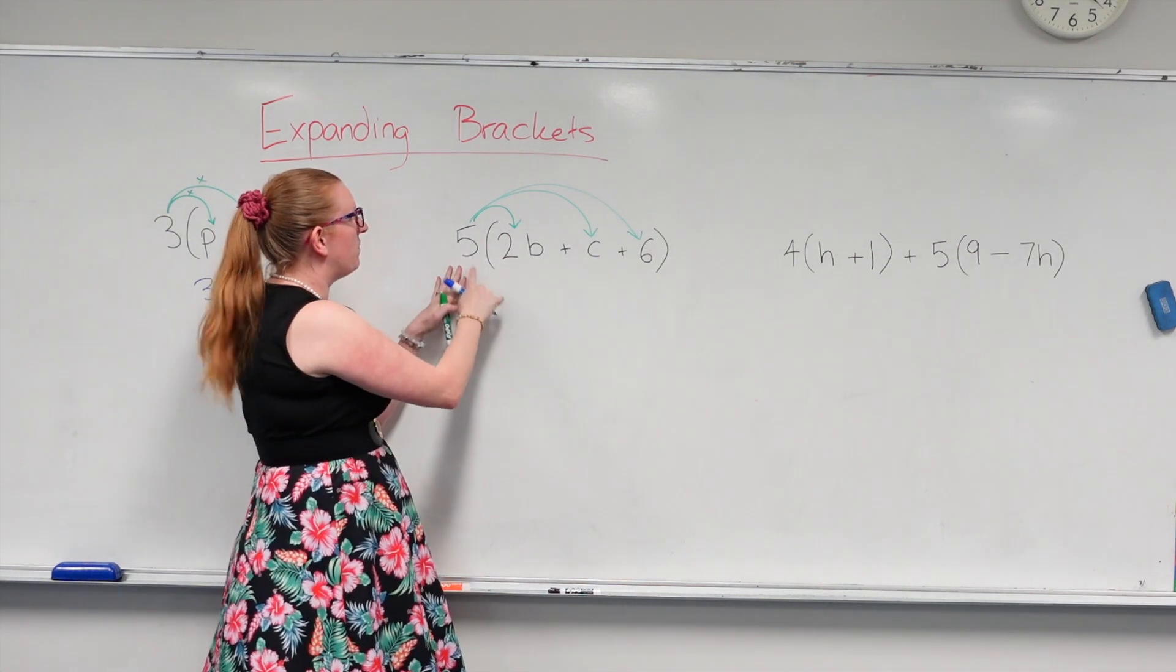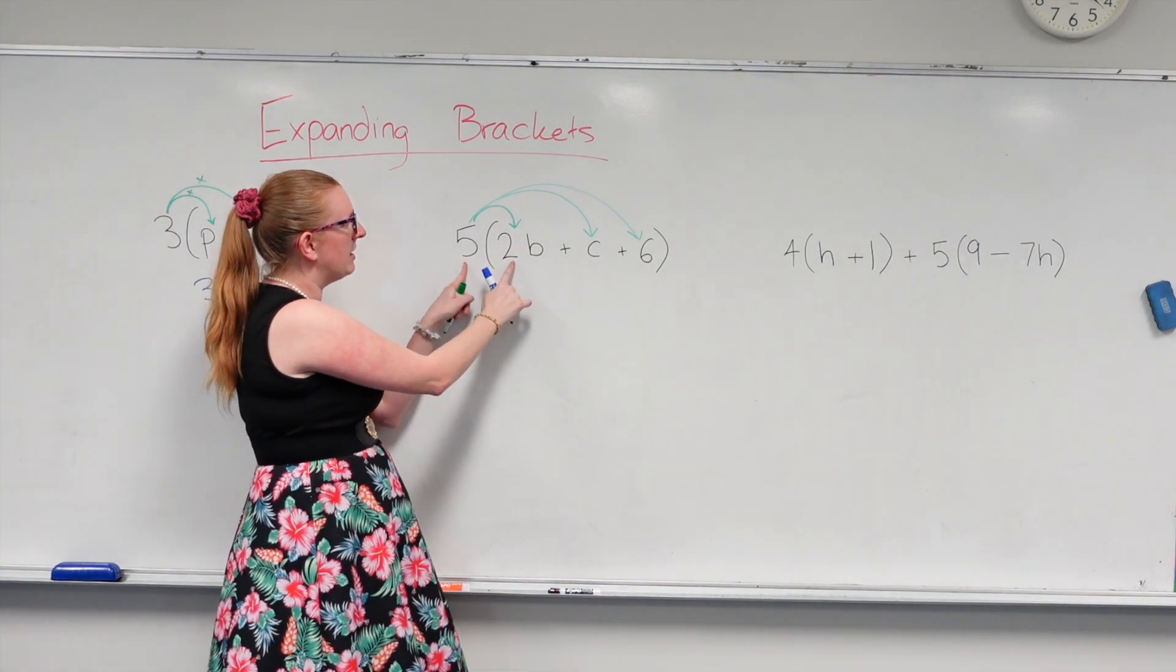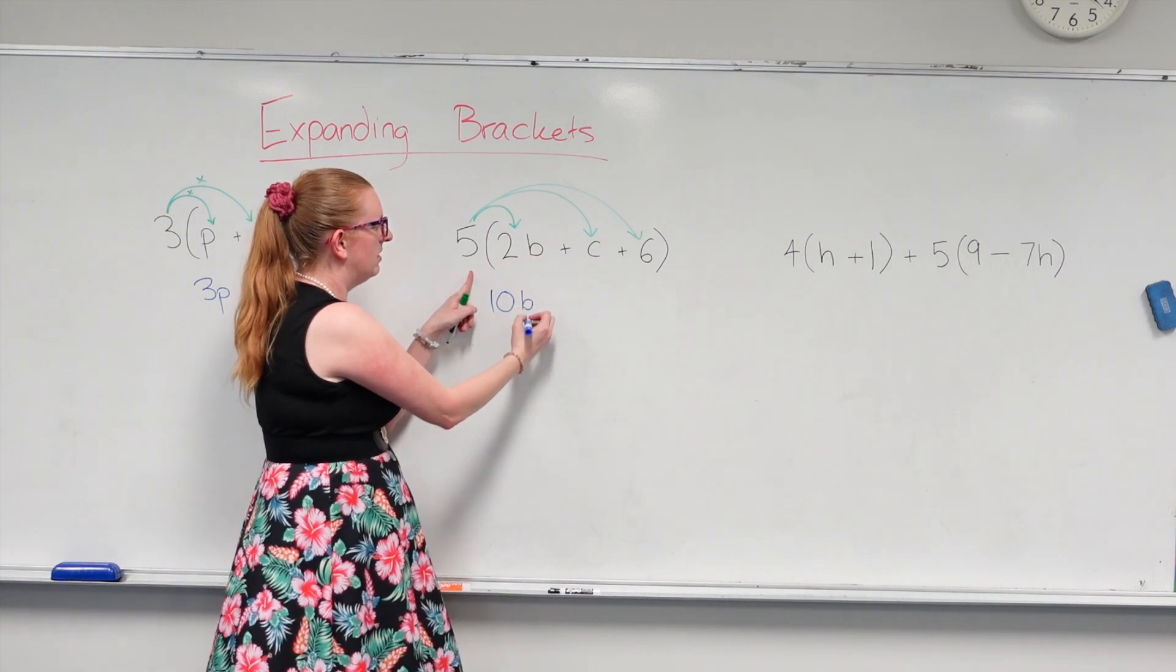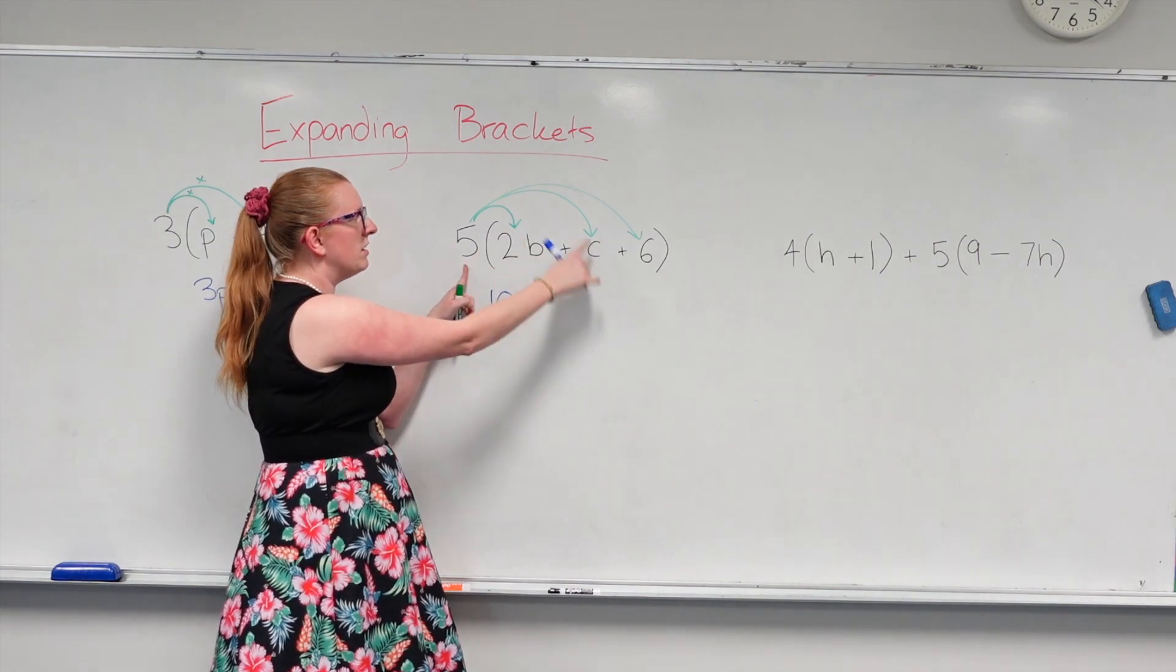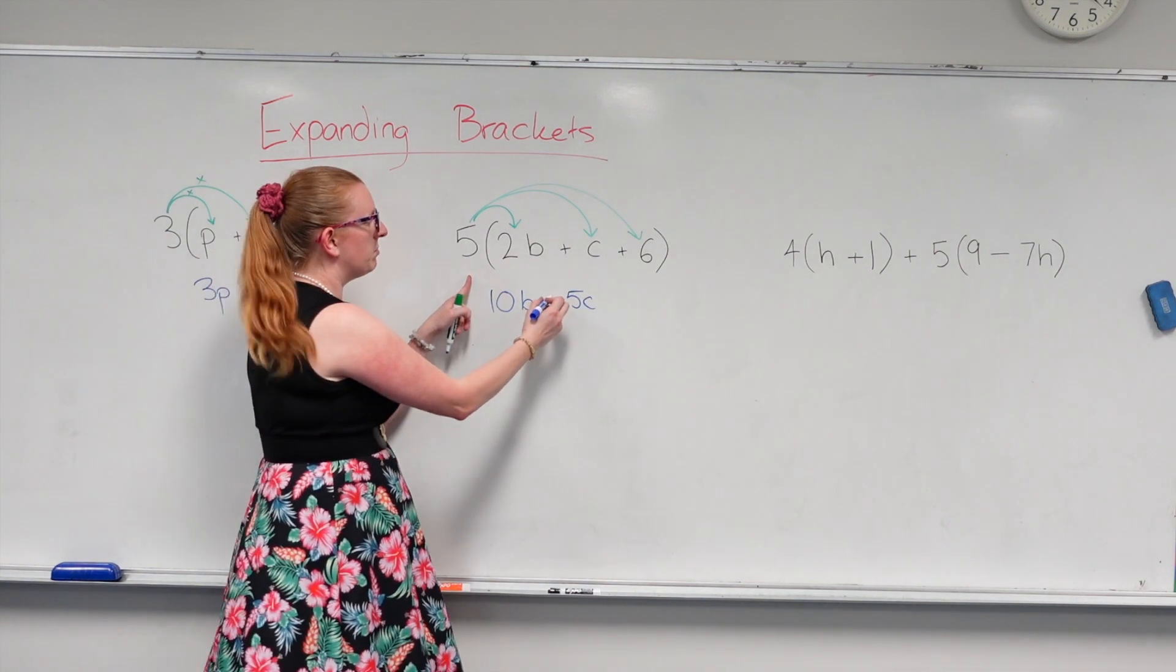So first up, I've got a 5 multiplying with 2b. So here I'm just going to be multiplying the numbers together. So 5 times 2 is 10 and then I put the b on the end. Now I've got 5 times c, which gives me 5c. And because it's positive, I'm going to put a little plus.